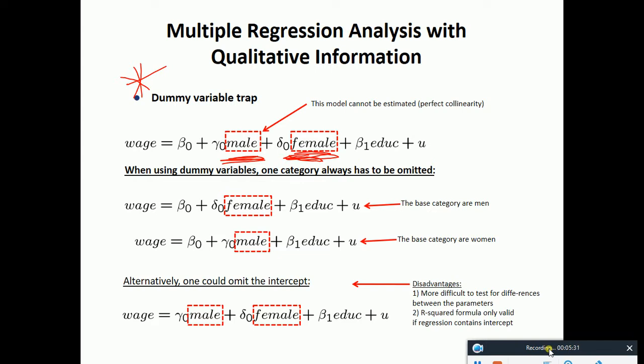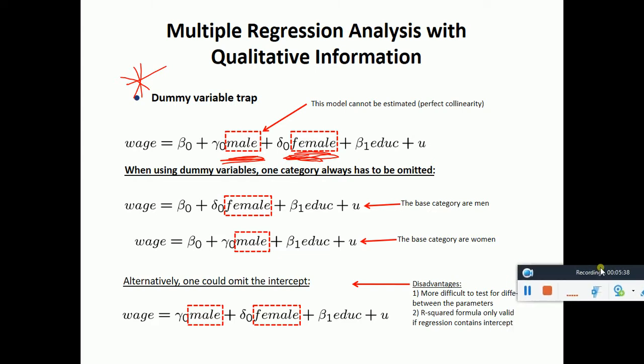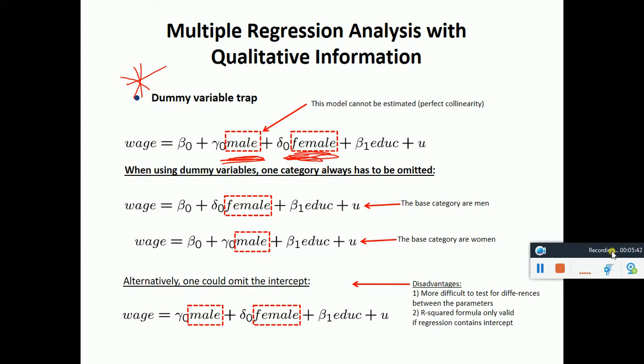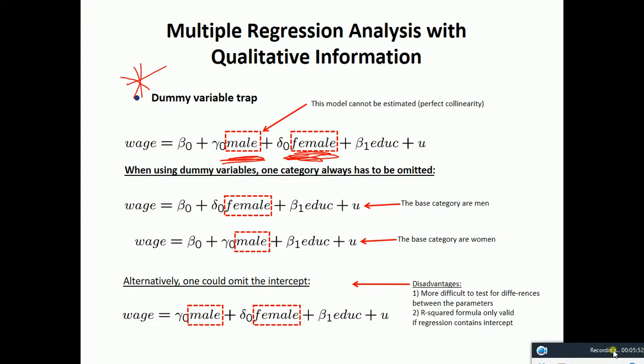When using dummy variables, one category always has to be omitted. What's the disadvantage when we omit one category? It's more difficult to test the differences between the parameters. And R square formula only valid if regression contains an intercept. These are the disadvantages when we omit the intercept. It's better if we have an intercept. Without an intercept, it is problematic.